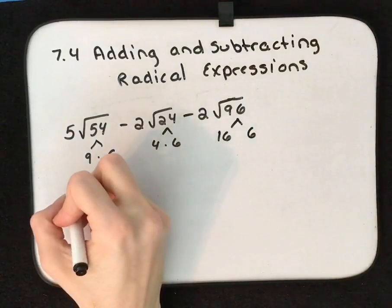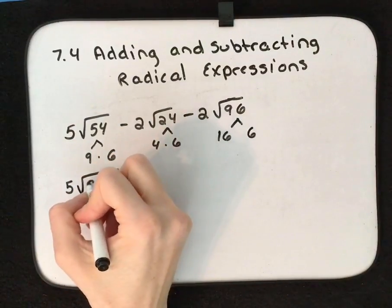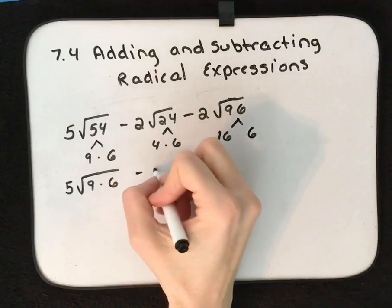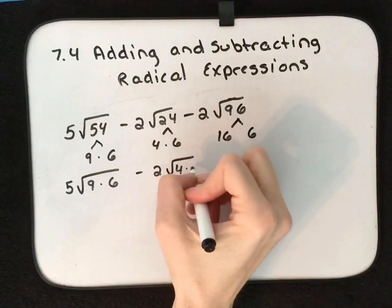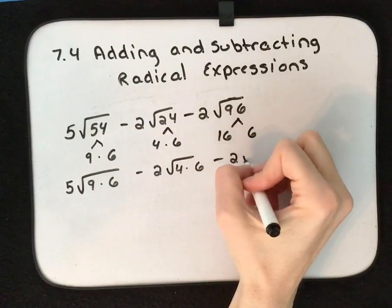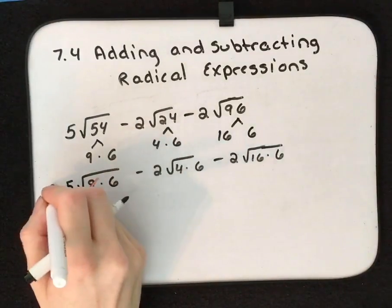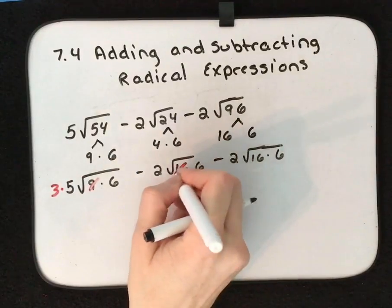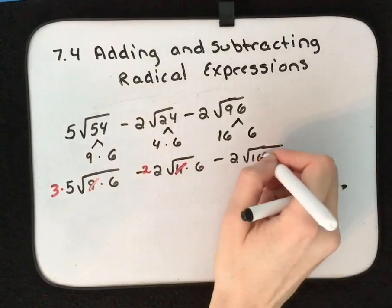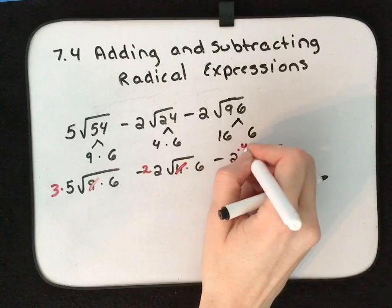So now we can write this as 5√(9 × 6) - 2√(4 × 6) - 2√(16 × 6). Well, the square root of 9 is 3, the square root of 4 is 2, the square root of 16 is 4.